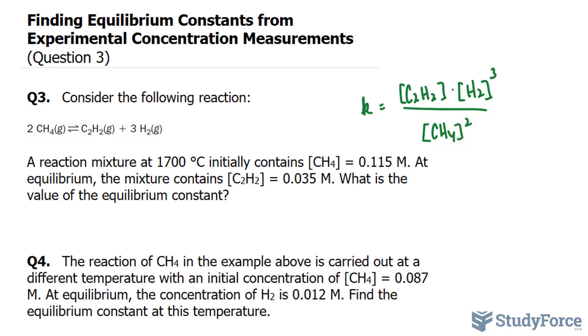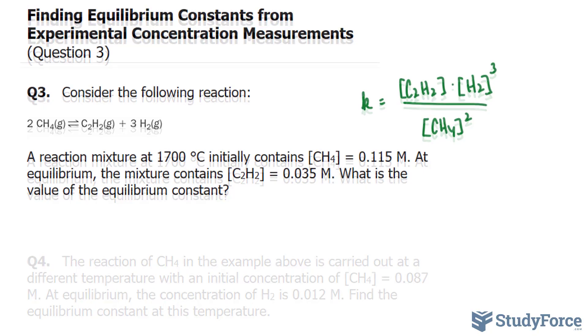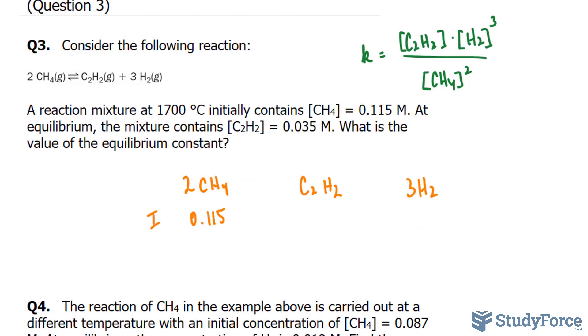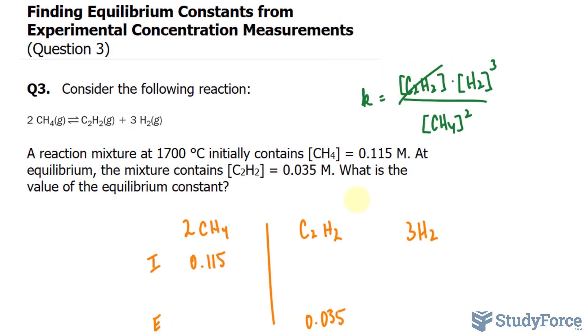Next, I'll create an ICE chart to represent my information. So I'll rewrite the expression: CH4, C2H2, and lastly hydrogen gas, and let's see what we've been given. We're told that initially we have 0.115 of this chemical and at equilibrium the mixture contains 0.035. So we already have this part and we can replace it with 0.035.